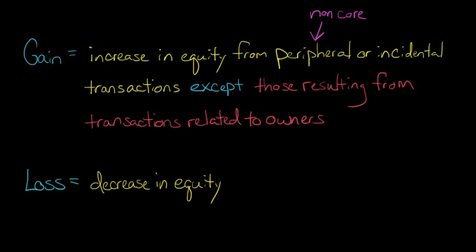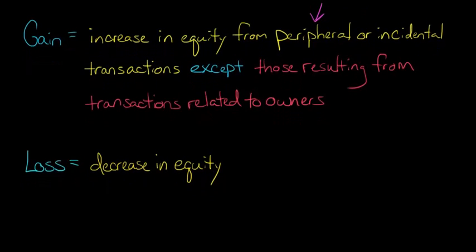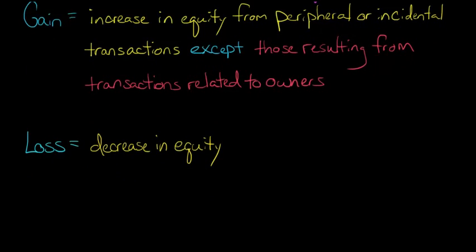So it's some kind of transaction that doesn't relate to the main business model, and it has to not be a transaction related to owners. Let me just explain by way of example here, because this is kind of a little bit abstract definition here of gains and losses. So let's say with our example, let's say that you own an ice cream shop.